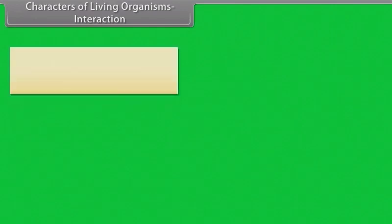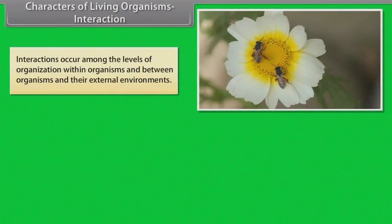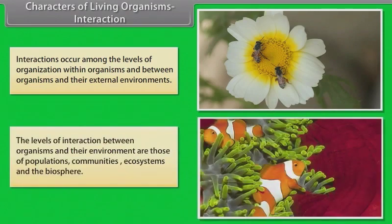Interactions occur among the levels of organization within organisms, and between organisms and their external environments. The levels of interaction between organisms and their environment are those of populations, communities, ecosystems, and the biosphere.